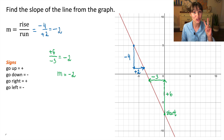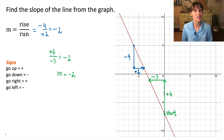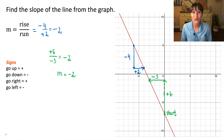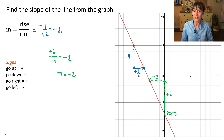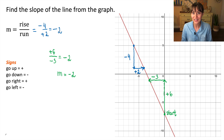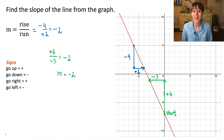Just pick two points from the graph and count the squares. When you go up, use the plus sign. When you go down, use the negative sign. When you go to the left, use the negative sign. And when you go to the right, use the plus sign. I hope this is helpful for you. Thank you for your good work, and I will see you in my next video.